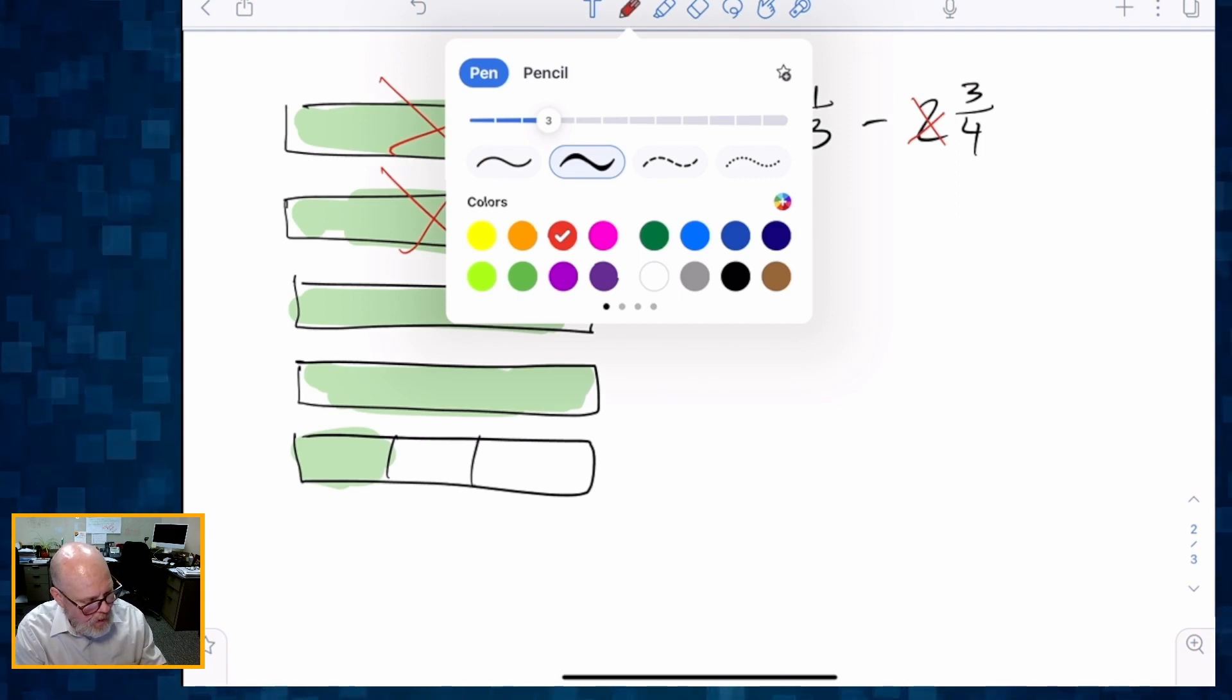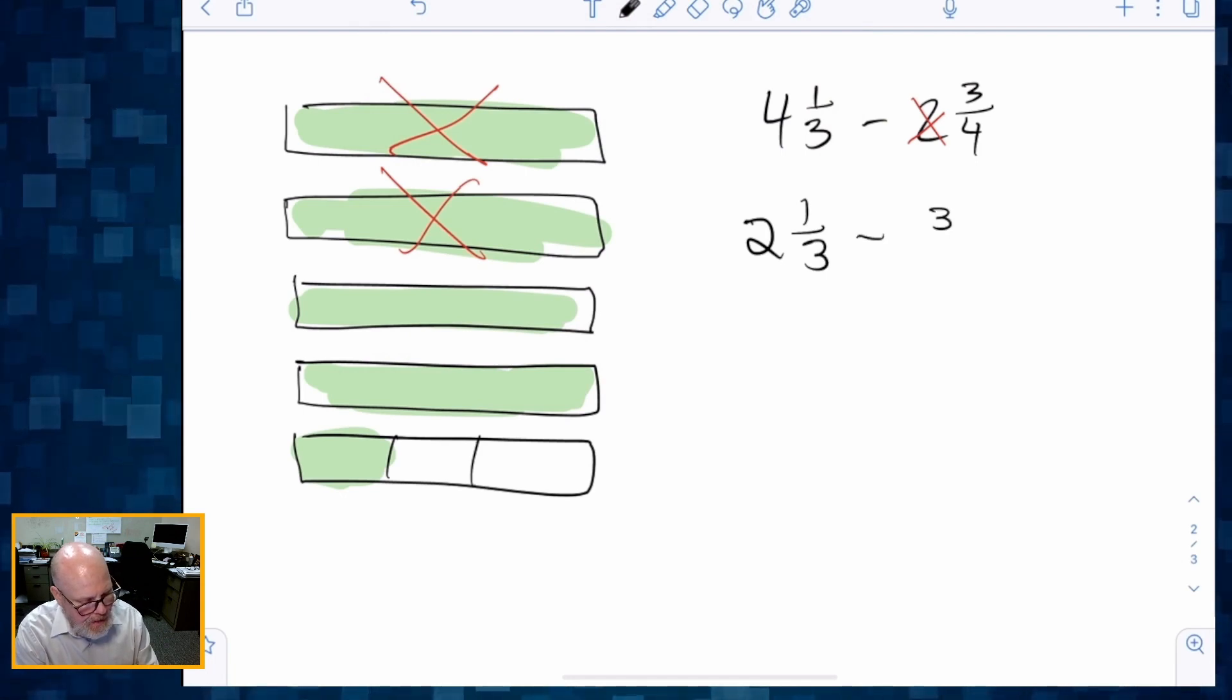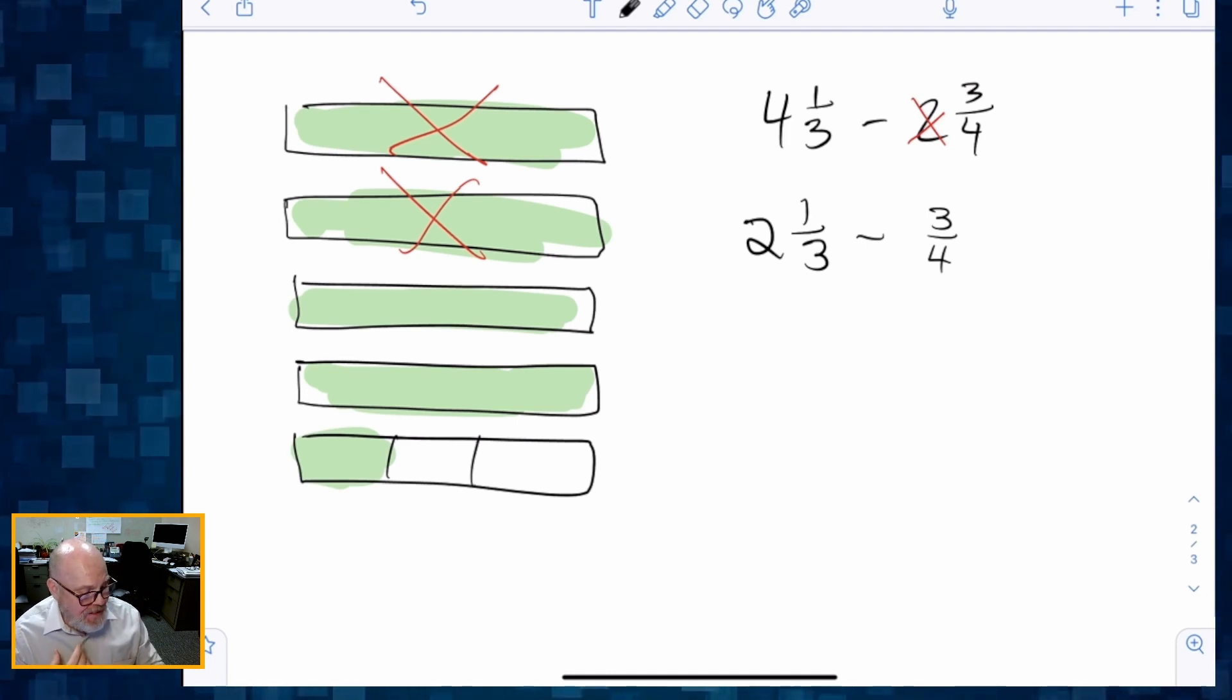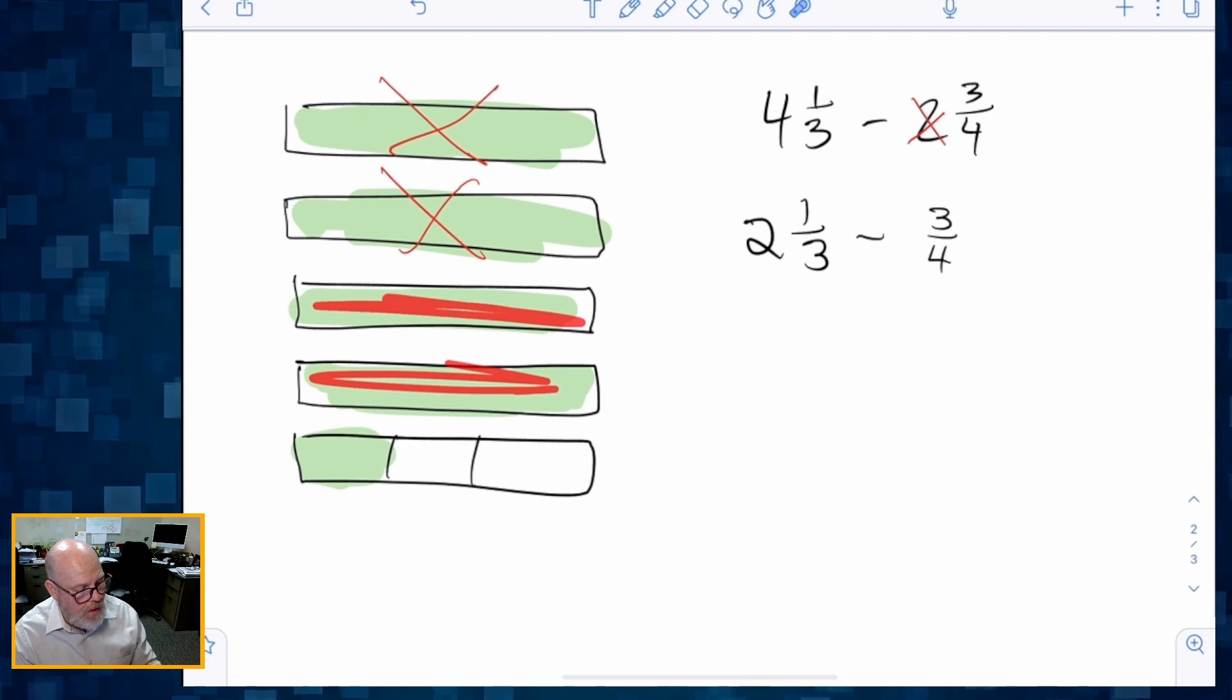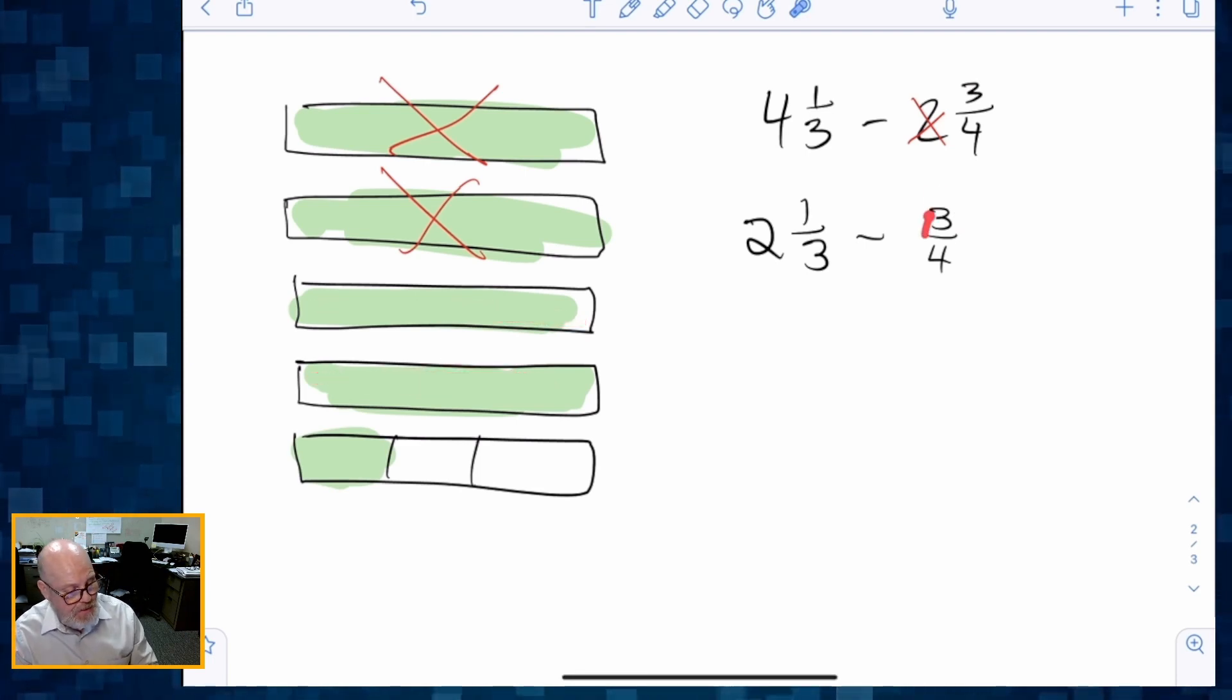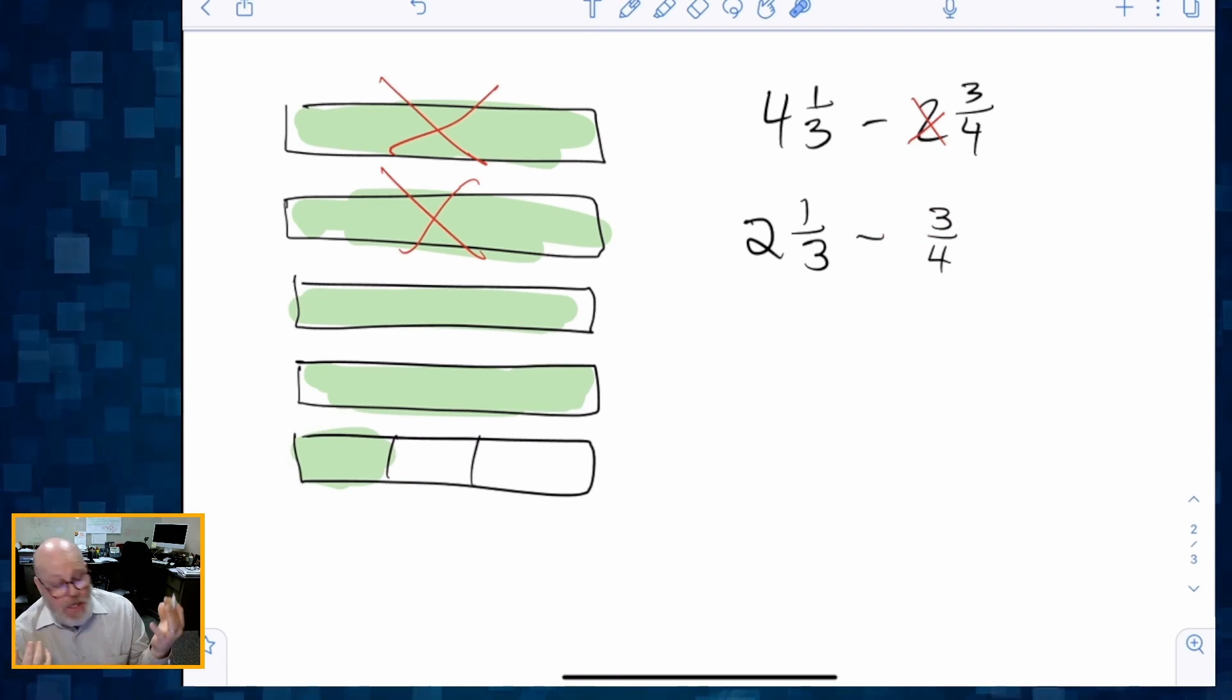So what do we have right now? We now have 2⅓, but we still need to take away that three fourths. All right, so it's easier to subtract that three fourths from one of these whole numbers than it is to subtract this three fourths from the one third. All right, so let's do it.